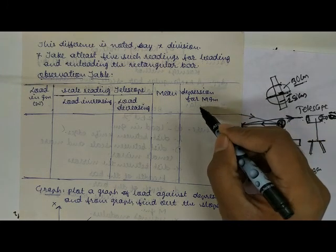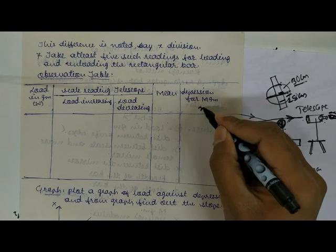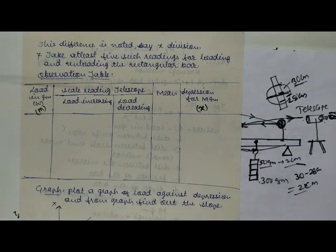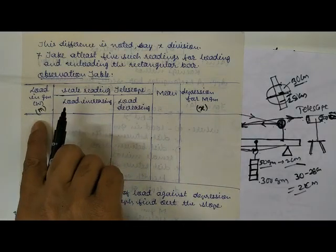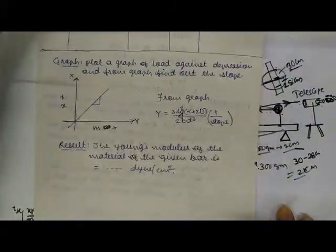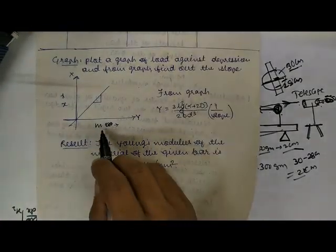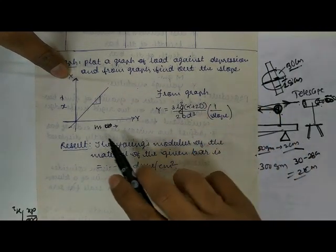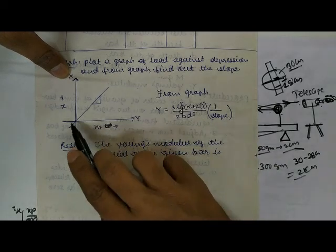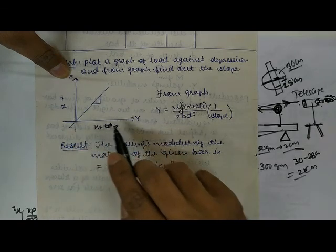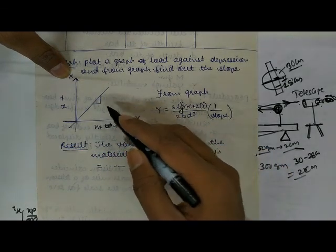Once we have the depression values, we call it x (depression), and m is the mass. We draw a graph between mass on the x-axis and depression x on the y-axis. We will find a straight-line curve passing through the origin, and the slope of this graph will be x divided by m.